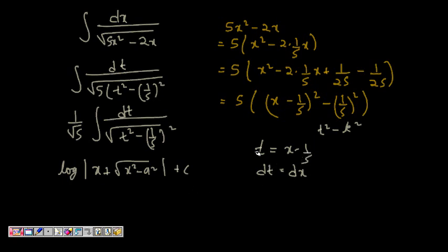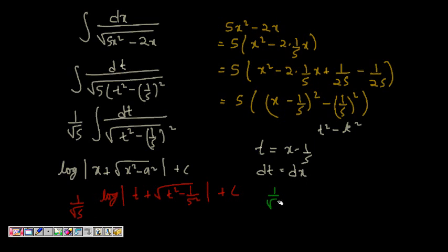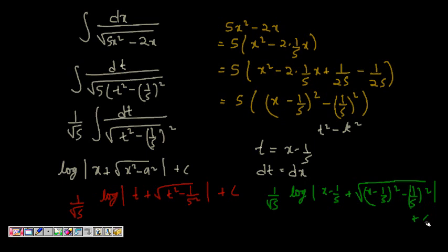The integral evaluates to (1/√5) times log of |t plus √(t² minus (1/5)²)| plus C. Substituting back t equals x minus 1/5, the answer is (1/√5) log|(x minus 1/5) plus √((x minus 1/5)² minus (1/5)²)| plus C. You can further simplify this, but this is the correct answer.